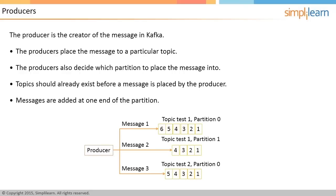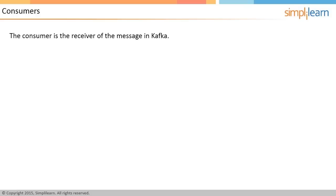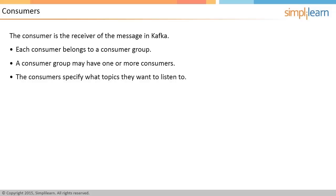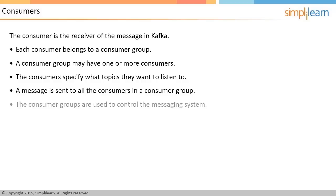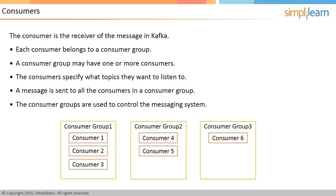The consumer is the receiver of the message in Kafka. Each consumer belongs to a consumer group, and a consumer group may have one or more consumers. Consumers specify what topics they want to listen to, and a message is sent to all the consumers in a consumer group. Consumer groups are used to control the messaging system. The image illustrates three consumer groups: consumer group one with three consumers, consumer group two with two consumers (consumer four and consumer five), and consumer group three with a single consumer (consumer six).